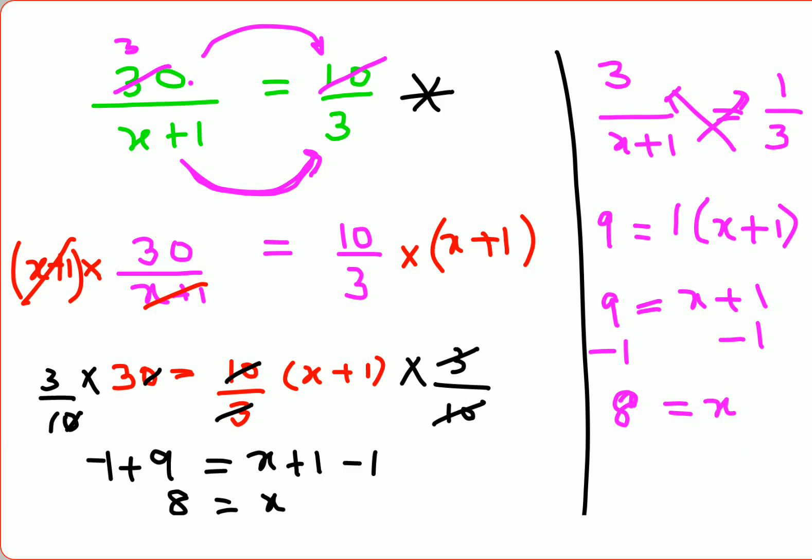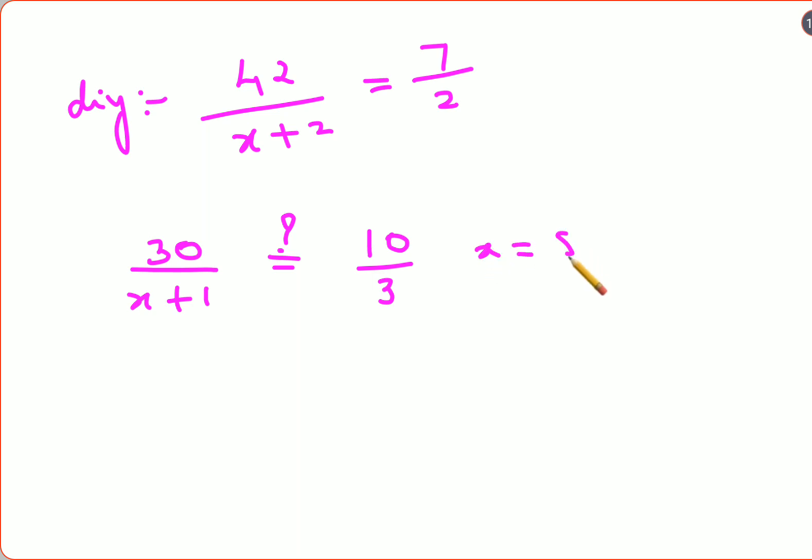So I hope I have literally shown you 3 to 4 methods in this particular sum itself. I would request all of you to practice these methods with this DIY: 42 upon x plus 2 equals to 7 upon 2. Please let me know your answers in the comment section. Coming back to your original question, 30 upon x plus 1, we need to see whether putting the value of x is getting you the RHS. This becomes 30 upon 9, and you can reduce this further because this is 10 by 3 and 3 by 3. So this becomes 10 upon 3. So this became your RHS.